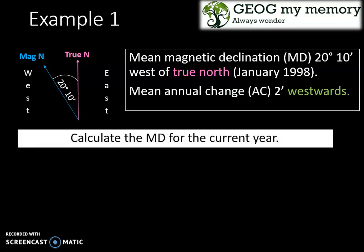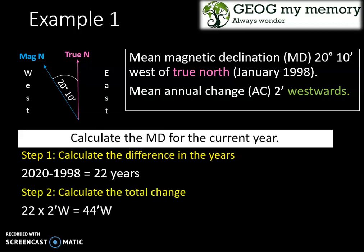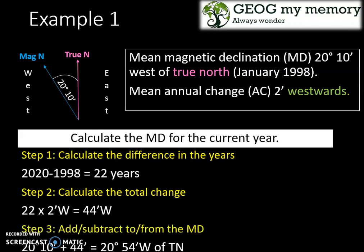Calculate the magnetic declination for the current year. Step 1: calculate the difference in years — 2020 minus 1998 gives you 22 years. Step 2: calculate the total change — 22 multiplied by 2 minutes westward gives you 44 minutes west.